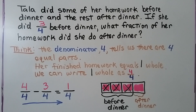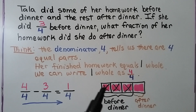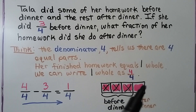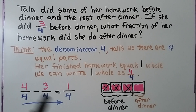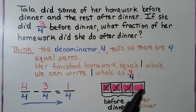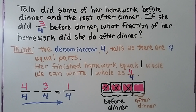We draw a quick picture with 4 parts. 4 fourths is 1 whole, so 4 parts are shaded. We're going to take away 3 fourths because that's what she did before dinner. That's going to leave just 1 part — that's 1 of 4 parts, that's 1 fourth. She had to do 1 fourth of her homework after dinner to have completed all her homework.